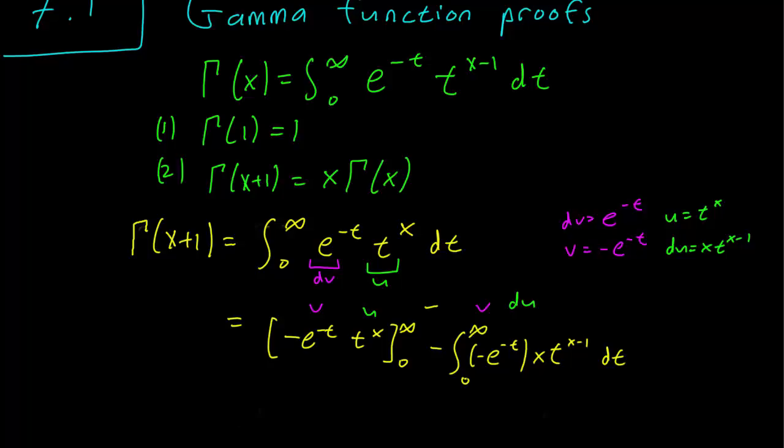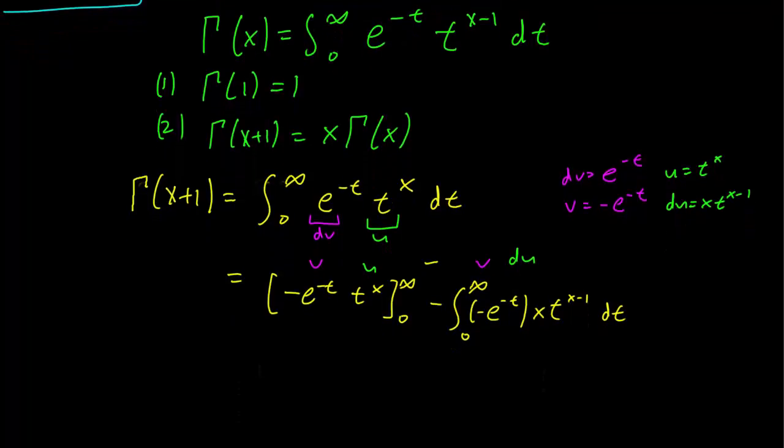And this integration by parts tells us that we have this equal to minus e to the minus t times t to the x from infinity to 0, minus x gamma of x.